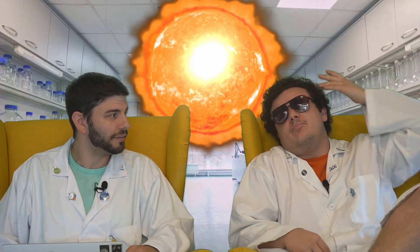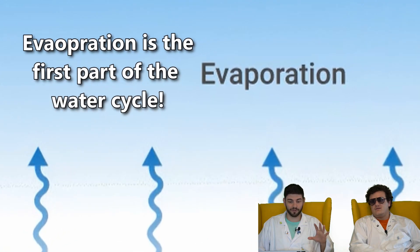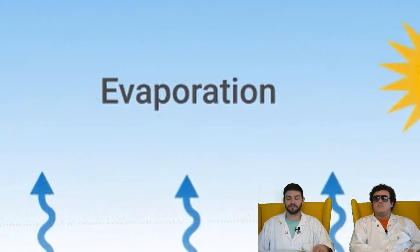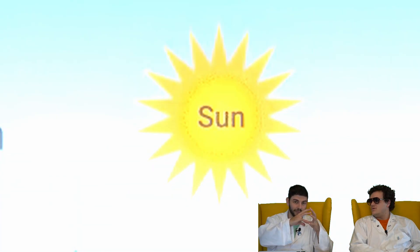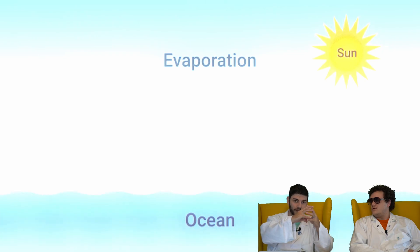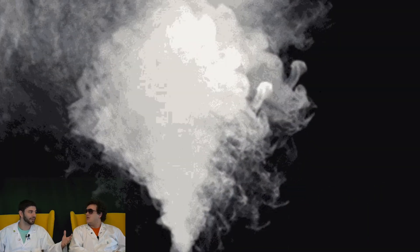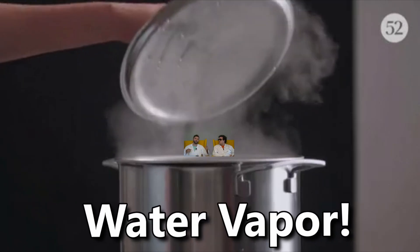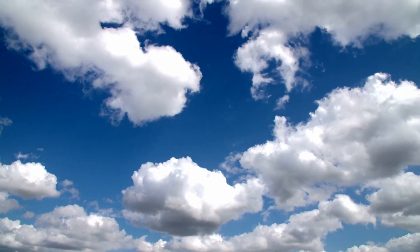Professor, it is boiling out there right now. I bet the water cycle is working overtime today. Evaporation is the first part of the water cycle. Evaporation happens because energy from the Sun heats up water, causing water molecules to expand. They turn to gas, and those are called water vapor. They float up into the atmosphere and make clouds.